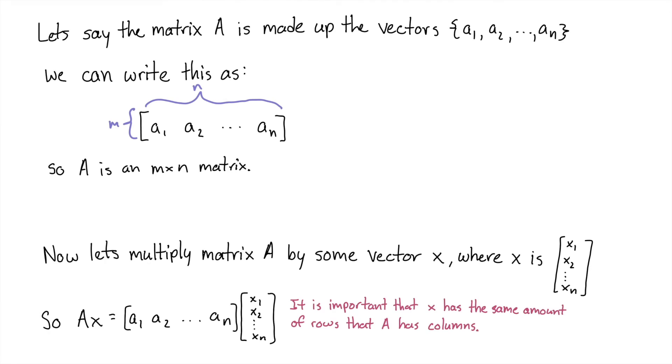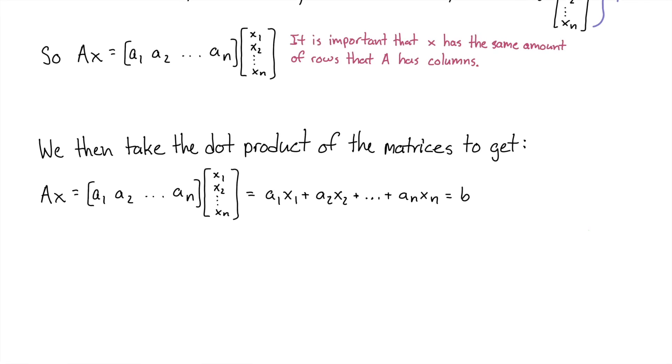Now, let's multiply matrix A by some vector X, where X is X1, X2, all the way through XN. And X1 is the first row, X2 is the second row, XN is the nth row. So, we'll label X with N rows, and we'll say any random variable Q for the columns.